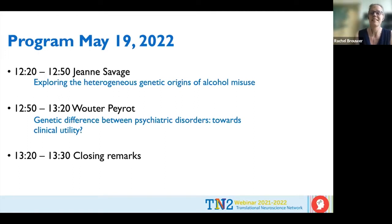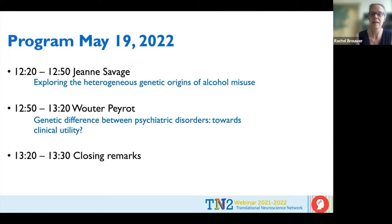Jeanne is a statistical geneticist who did her PhD on alcohol misuse. She then moved to the Complex Trait Genetics Lab, where she has been for five years, studying genetics of a range of phenotypes. Last year she received a Veni grant and returned to her favorite topic — alcohol misuse. Today she will present some of her findings. Please go ahead, Jeanne.